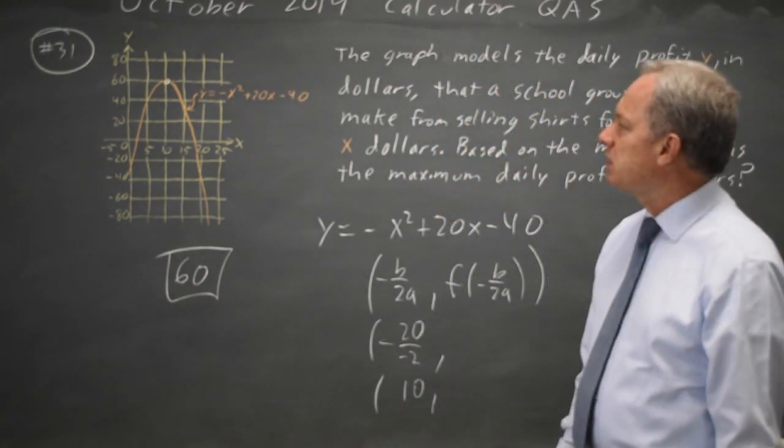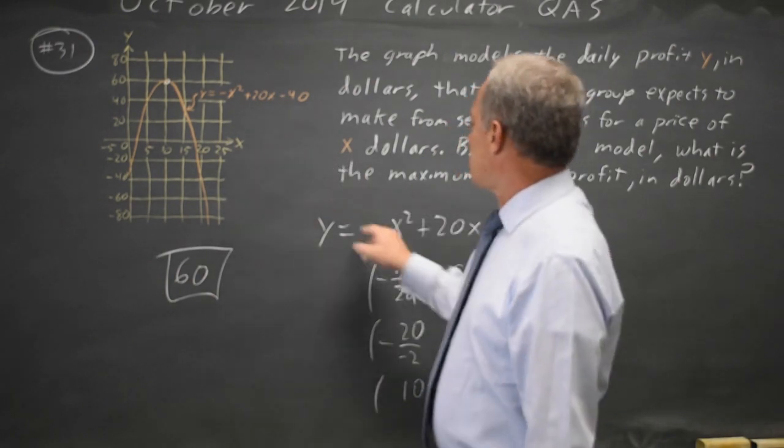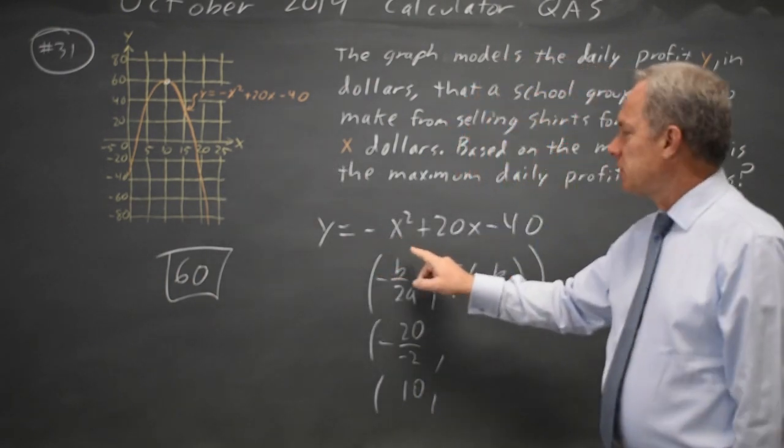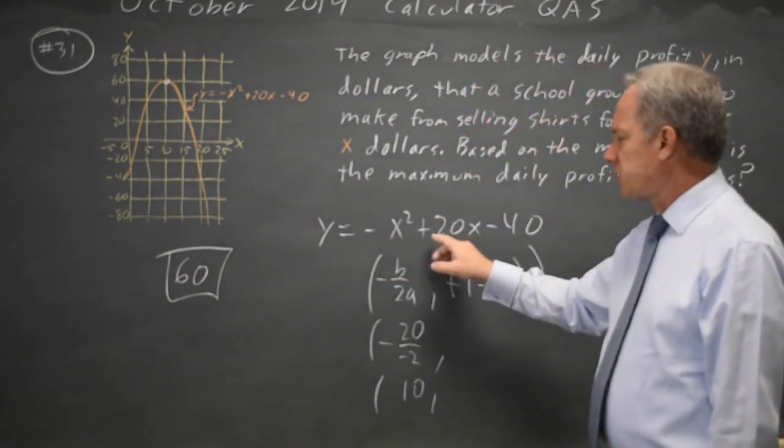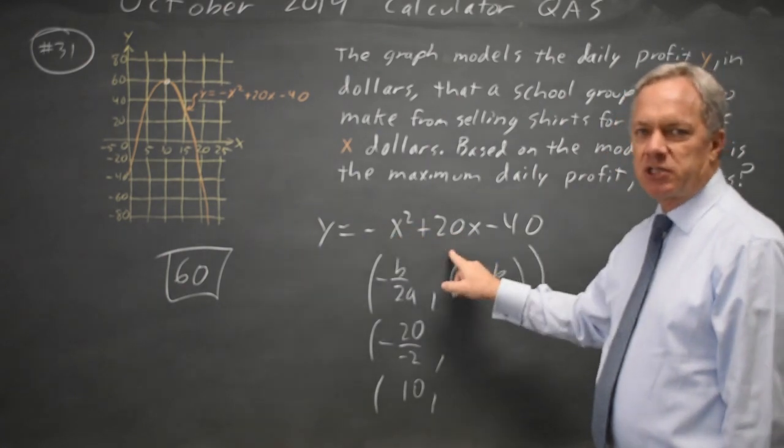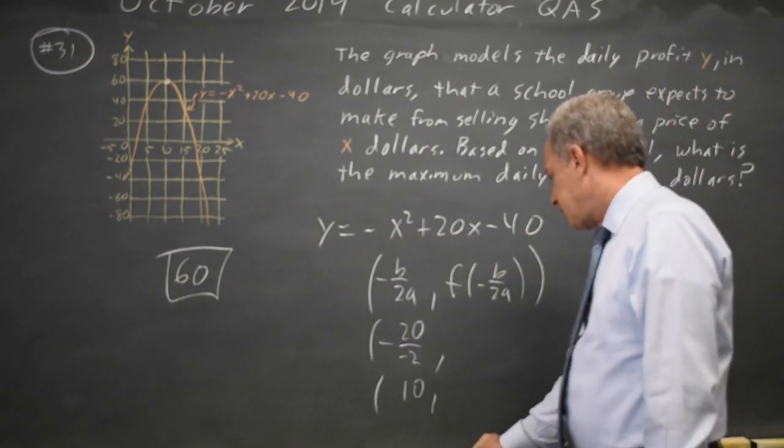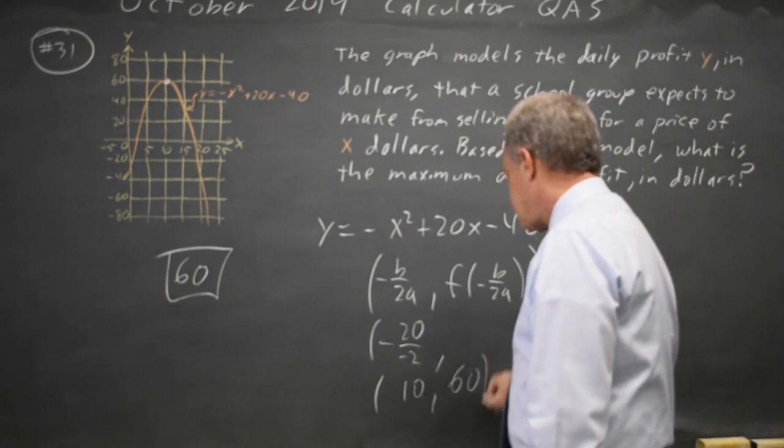So f of 10, even without a calculator, is negative 10 squared is negative 100 plus 20 times 10 is plus 200. Negative 100 plus 200 is positive 100, minus 40 is again 60. Same answer.